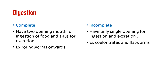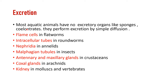In excretion, most aquatic animals have no excretory organ — like sponges and coelenterates — and excretion occurs by simple diffusion. This slide is very important: flame cells in flatworms, intracellular tubes in roundworms, nephridia in annelids, Malpighian tubules in insects, antennal and maxillary glands in crustaceans, coxal glands in arachnids, and kidneys in mollusks and vertebrates.